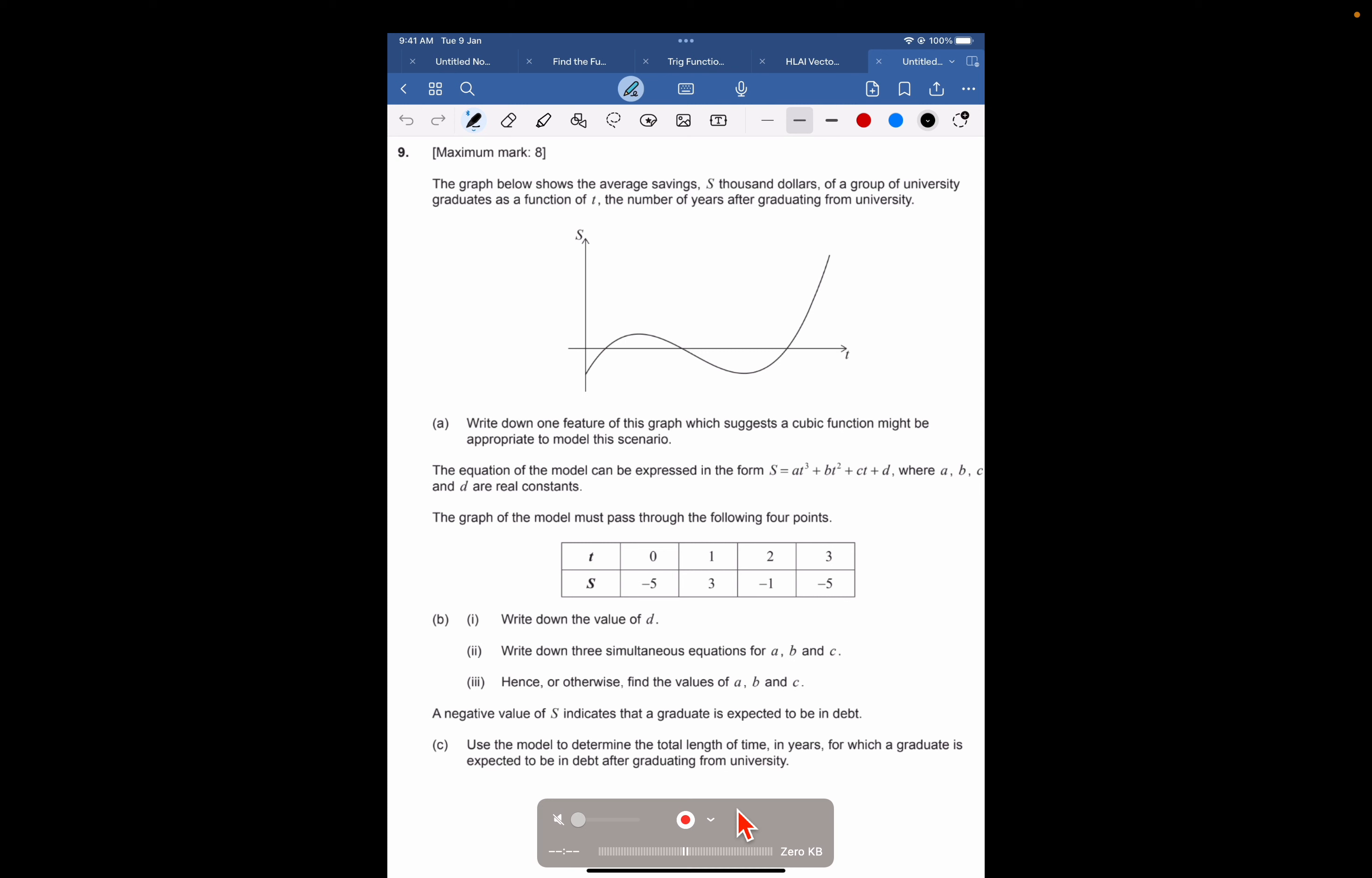The S is on the Y axis, S is the average savings in thousands of dollars. So I'm just going to put that on there, this is in thousands of dollars. And the X axis is T, the number of years after graduating. It's always nice to put the labels on the graph so you can keep referring to it.